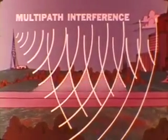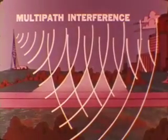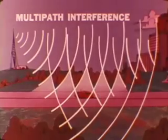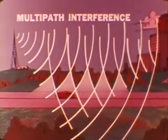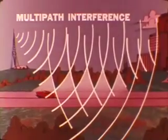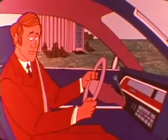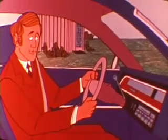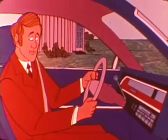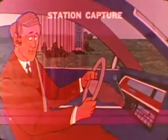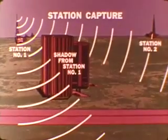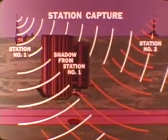When FM waves reflect from obstructions, the transmitted signal is disrupted, causing what we call multi-path interference. Wave disruption occurs because the reflected and the direct signals can both reach the receiving antenna at the same time, causing a distorted audio effect. Another condition which can result from FM signal interruption is station capture or swapping, where we get a momentary station change without touching the tuning controls.